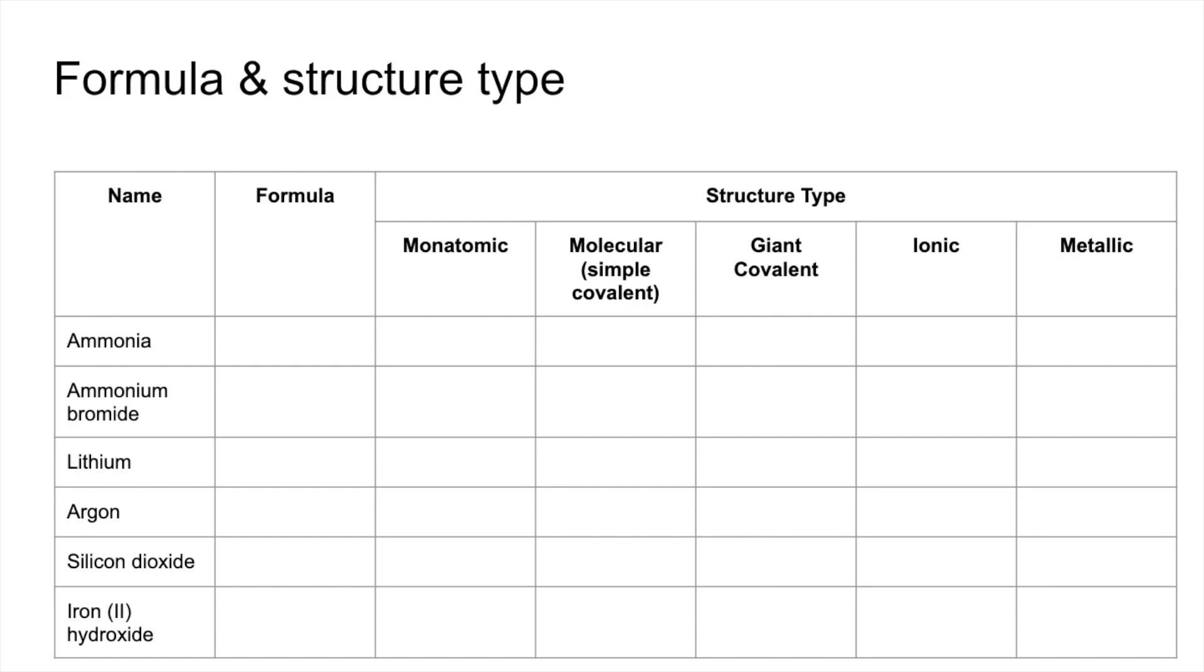So formulas first. Ammonia NH3, ammonium bromide NH4Br, lithium is just Li, argon is just Ar, silicon dioxide SiO2, and iron(II) hydroxide is Fe(OH)2.